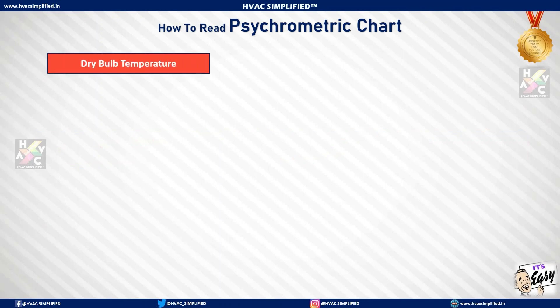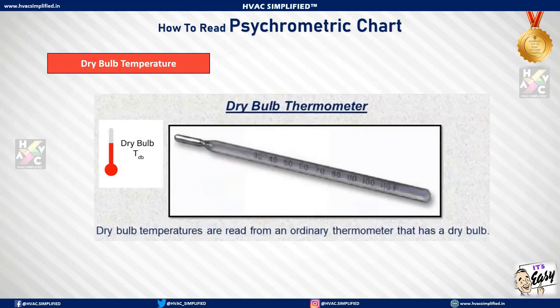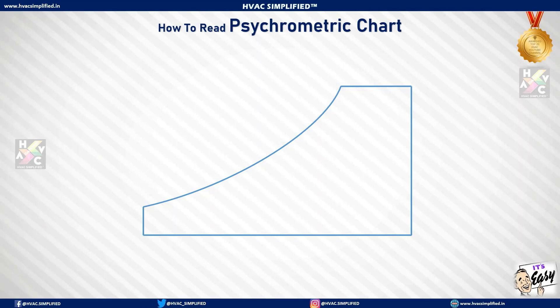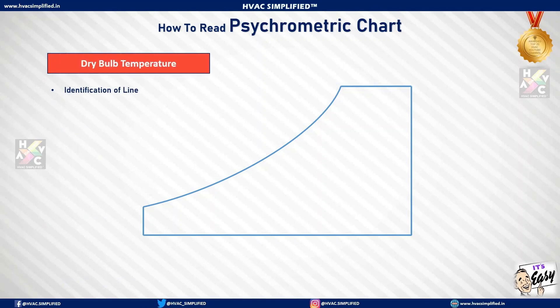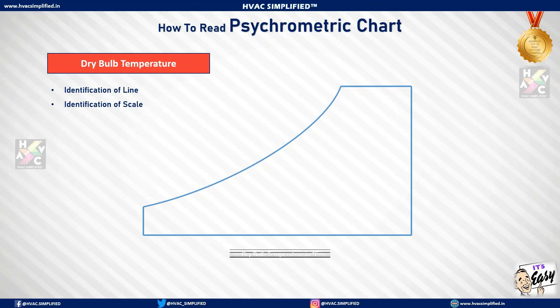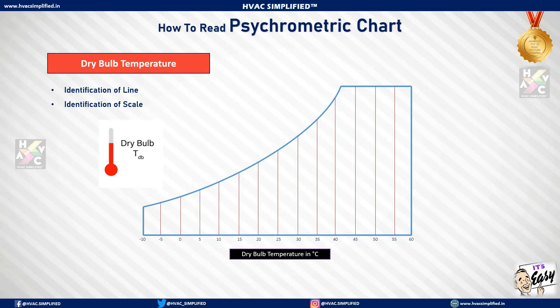The first important parameter in the psychrometric chart is known as dry bulb temperature. Dry bulb temperature is read from an ordinary thermometer that has a dry bulb. On a psychrometric chart, the dry bulb temperature is measured in degrees centigrade on the x-axis, from left to right, and is represented as a straight vertical line.